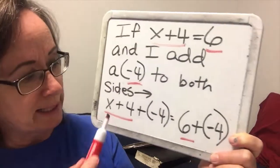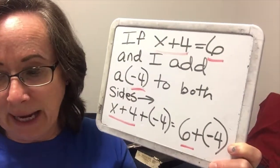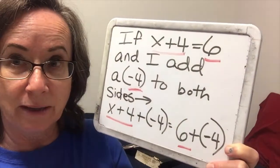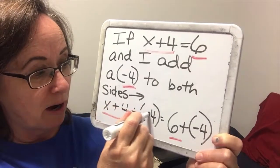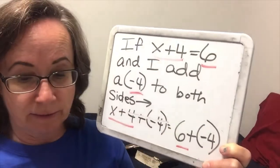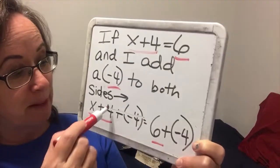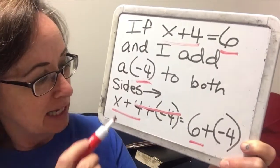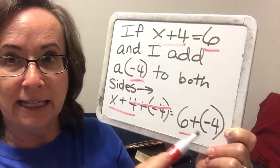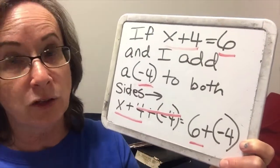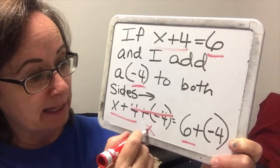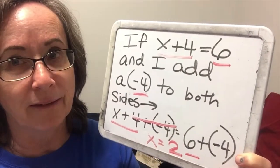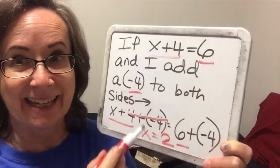So what does this tell me? What is 4 plus negative 4? Those are inverses of each other, so they cancel out — 4 and negative 4 add to 0. So we get x equals 6 minus 4. What is 6 minus 4? That's 2. So we get x equals 2. Because 2 plus 4 is 6.